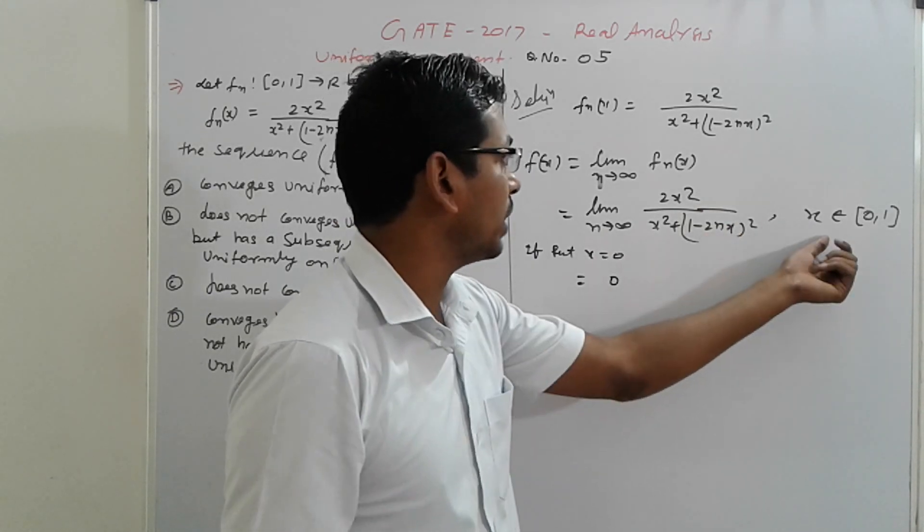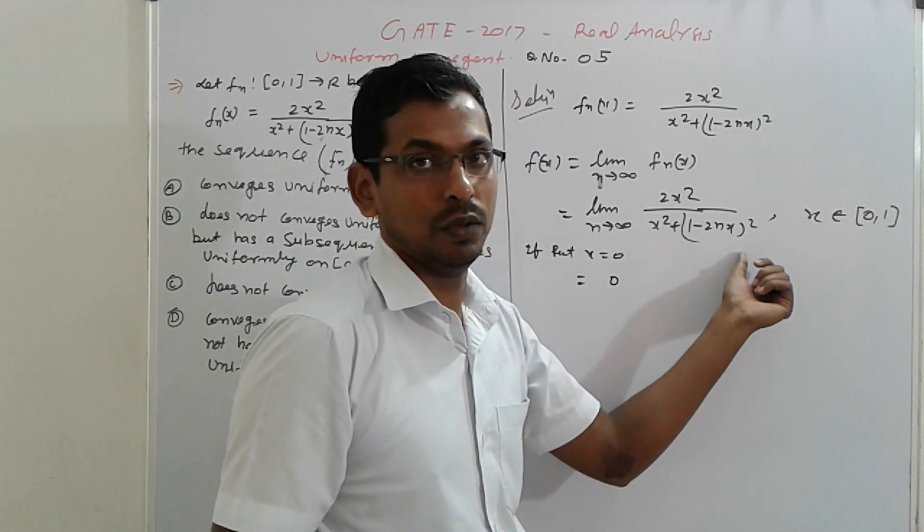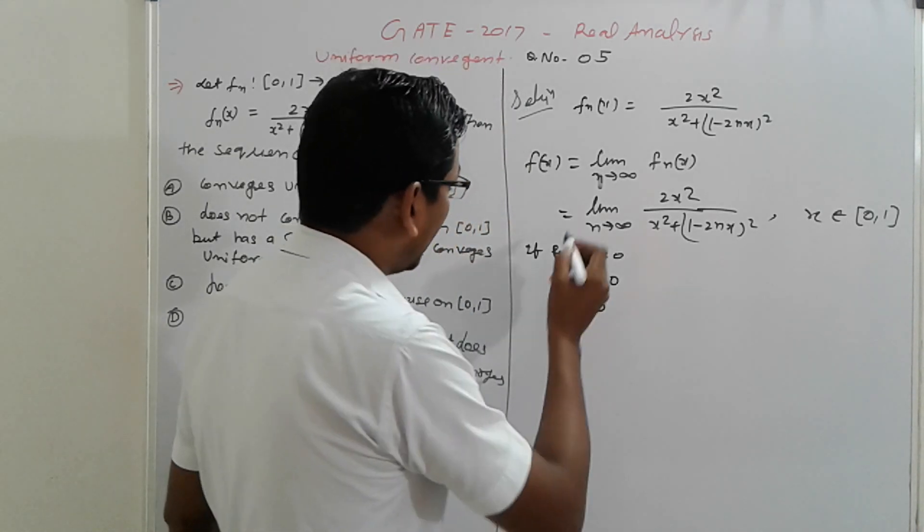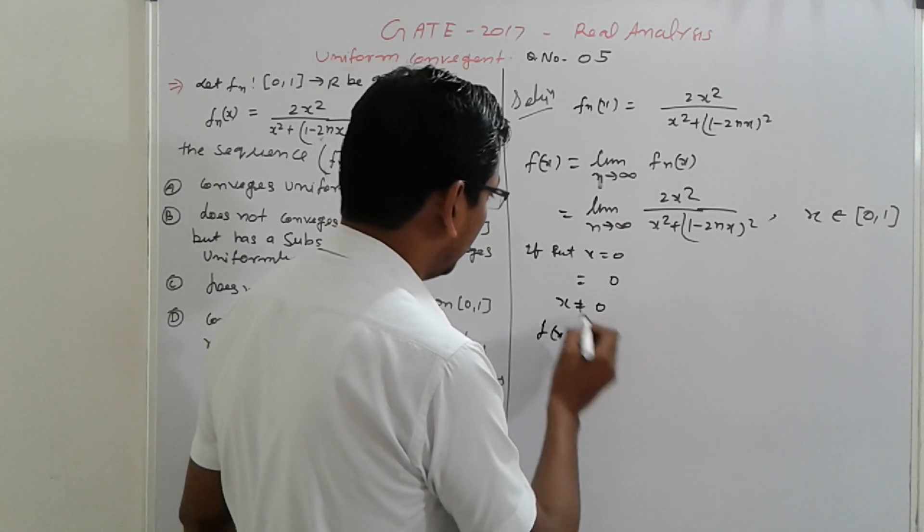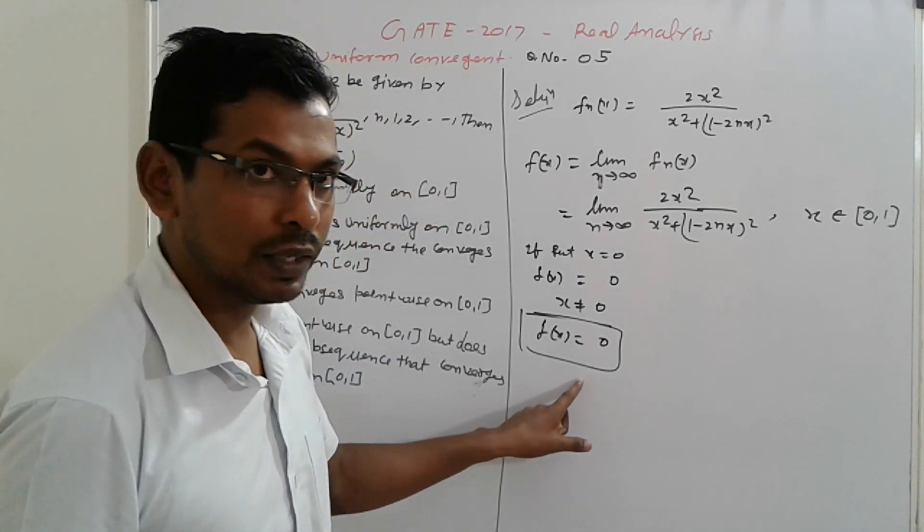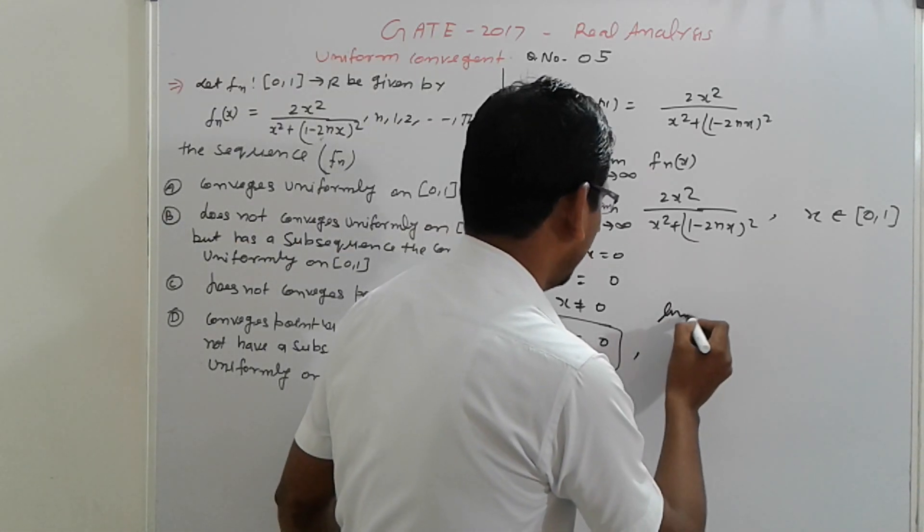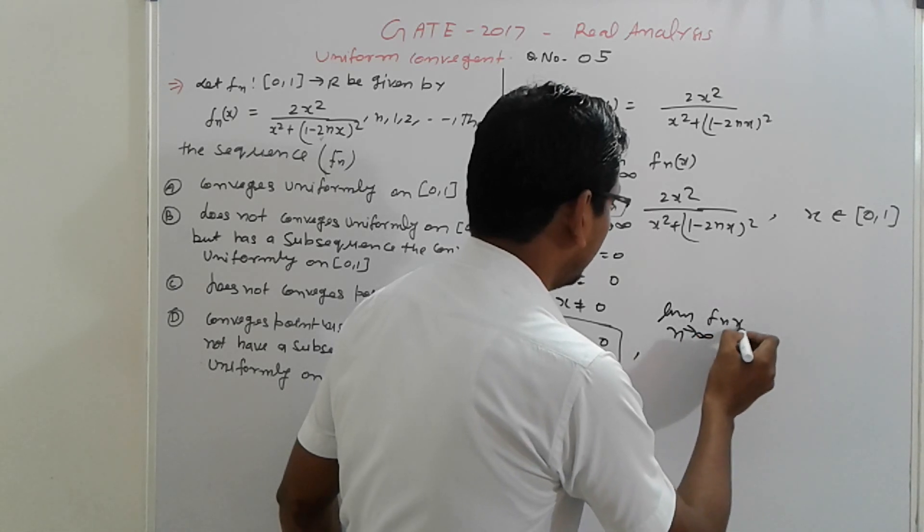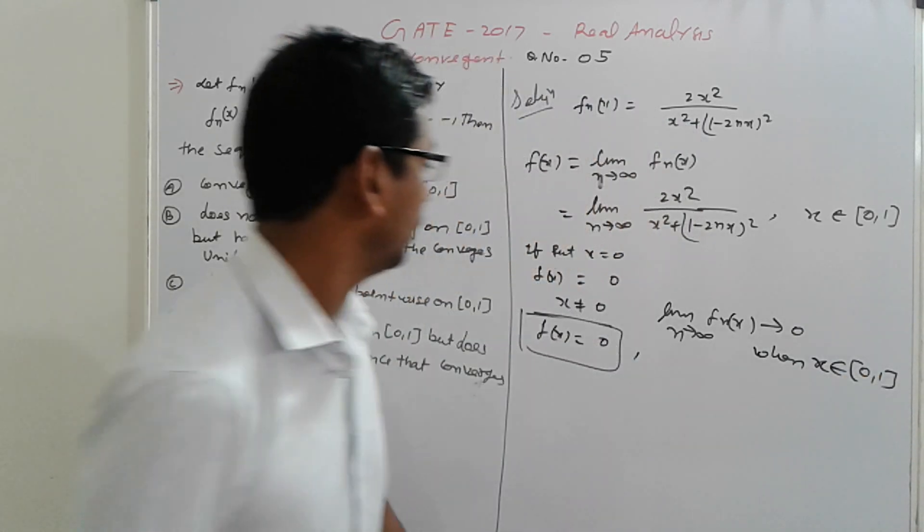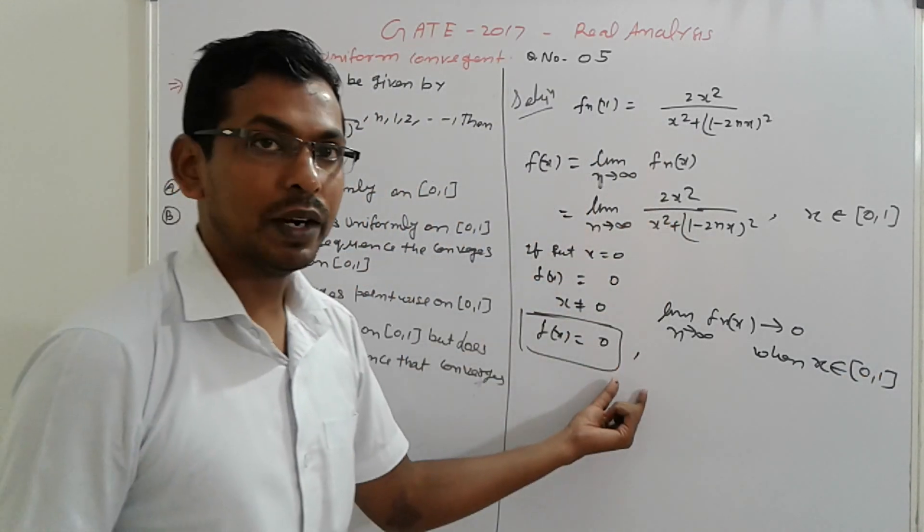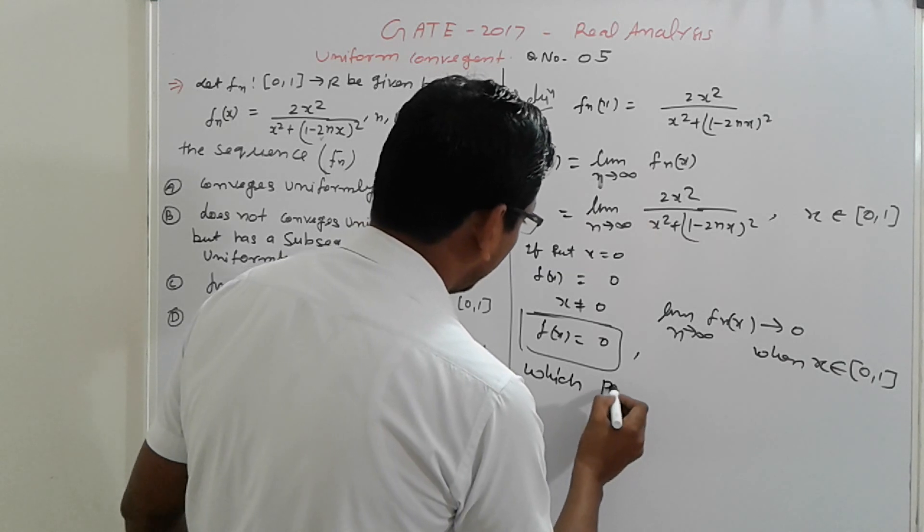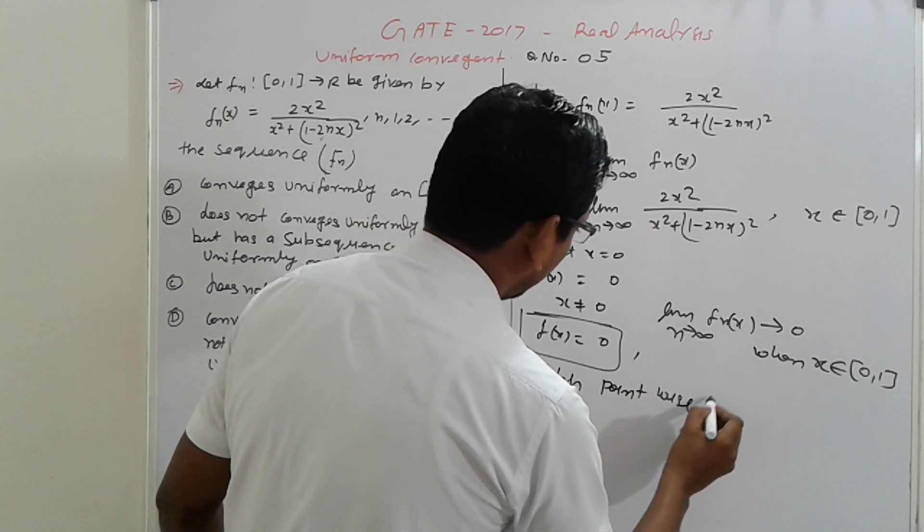So in another, put x is not equal to 0, so that case is also, we get f(x) here, f(x) equal to 0. Now f(x) equal to 0, it means limit n tending to infinity f(x) equal to 0 when x belongs to [0,1]. So if 0 find out, so that means every time tending to 0, it means which is point-wise convergent.